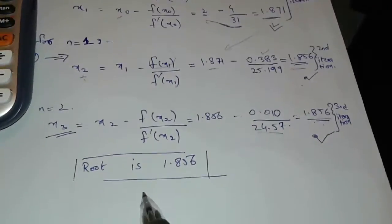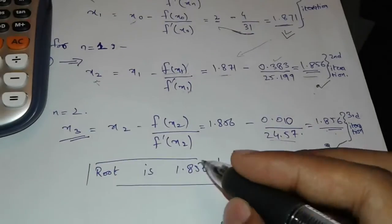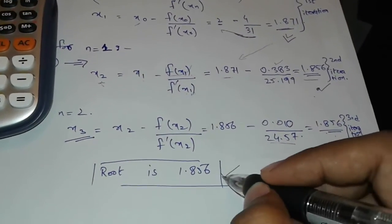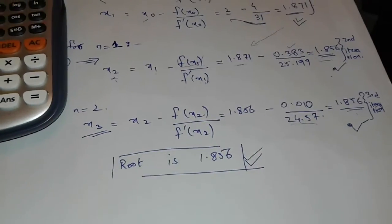So 1.856 is my root, calculated by the Newton-Raphson method. This is how it is calculated. Thank you for watching.